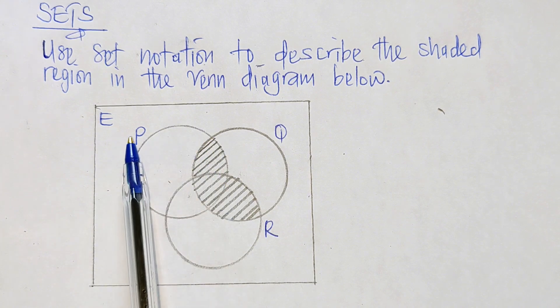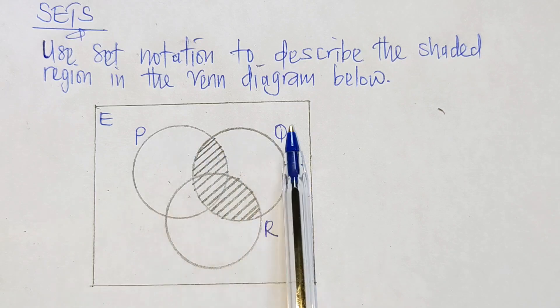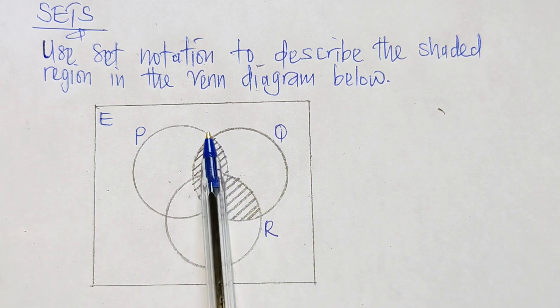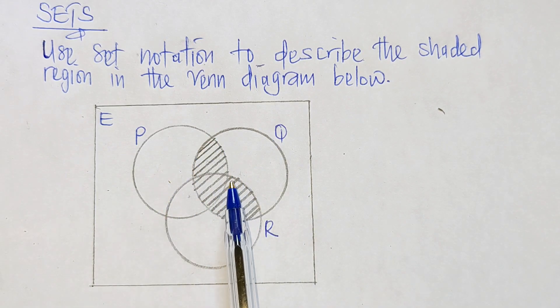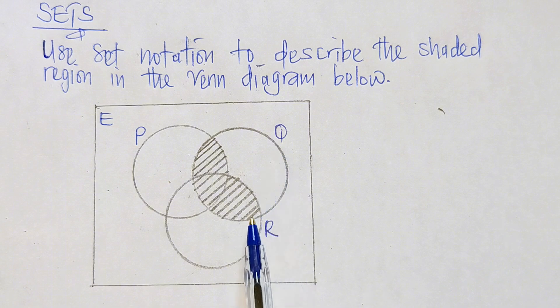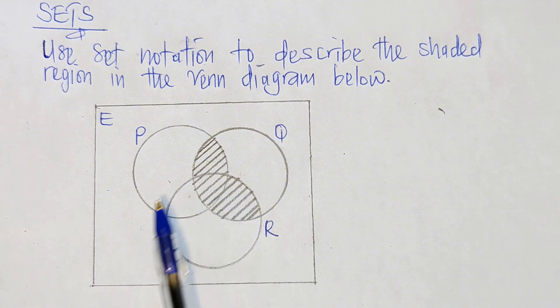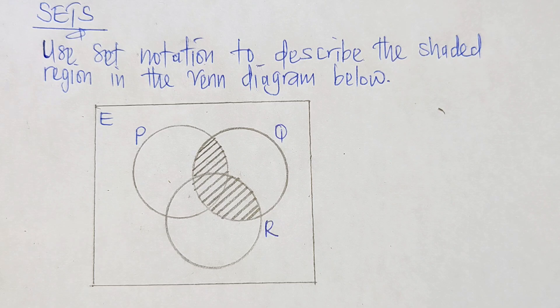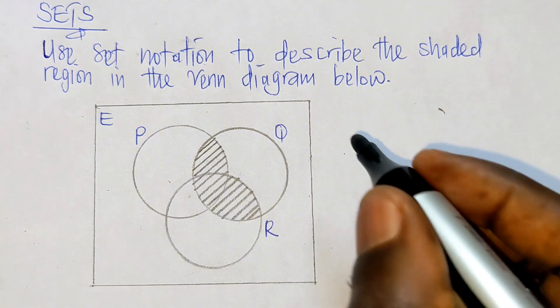...shaded region includes P intersection Q, so P∩Q is shaded, and also Q intersection R. So now we can use union to combine these two sets that we've come up with, that is P∩Q, so...